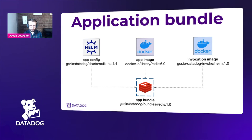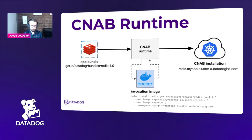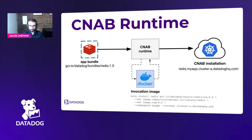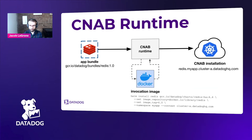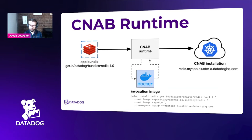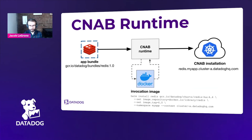Once we have a bundle, we can see what it looks like to install it. The bundle is immutable and can be used to create multiple CNAB installations — copies of that application installed in different environments. At a high level, we take the bundle and pass it to a CNAB spec-compliant runtime. Instead of having direct support built in for all target platforms, the runtime simply executes the invocation image contained within the bundle, which has all the logic necessary to perform something like a Helm install in a target cluster.